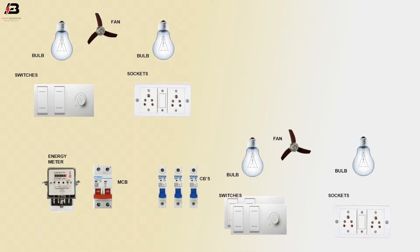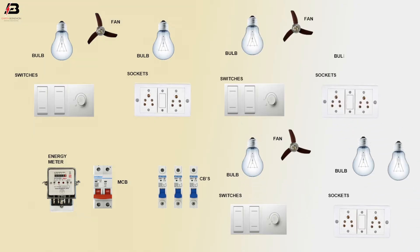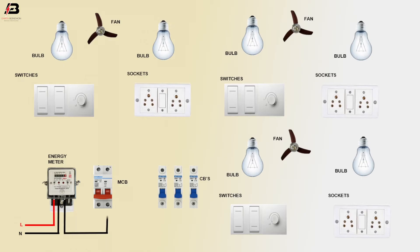Room 3: switches, bulb 1, fan, sockets and bulb 2. Phase connection to energy meter. Neutral connection to energy meter. Neutral connection outgoing from energy meter to MCB neutral point. Phase connection outgoing from energy meter to MCB phase point.